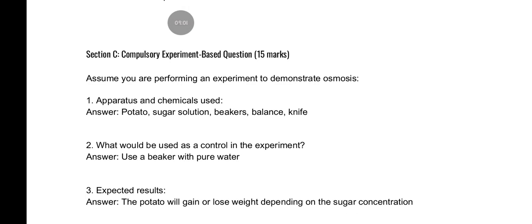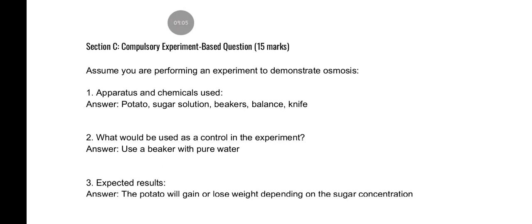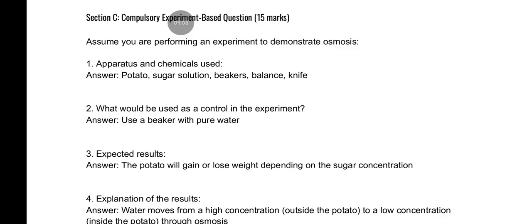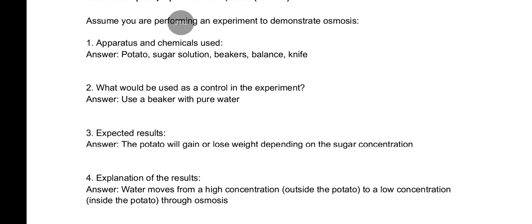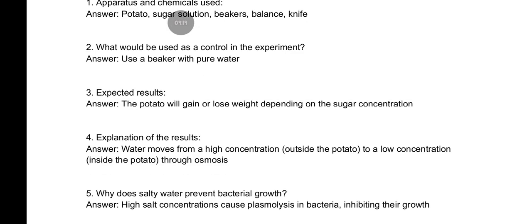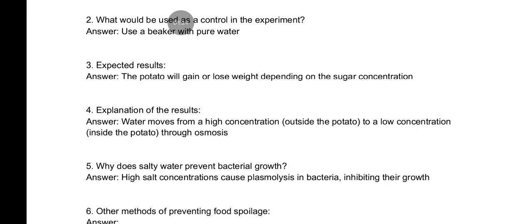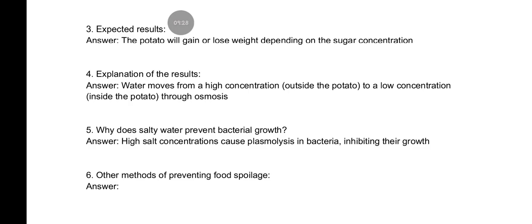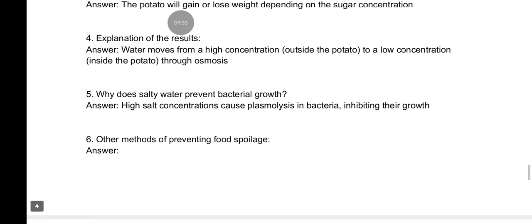The apparatus and chemicals used are: a potato, sugar solution, beakers, a balance, and a knife. The control used in the experiment is a beaker with pure water. The expected results are that the potato will gain or lose weight depending on the sugar concentration. Explanation: water moves from a high concentration outside the potato to a low concentration inside the potato through osmosis.